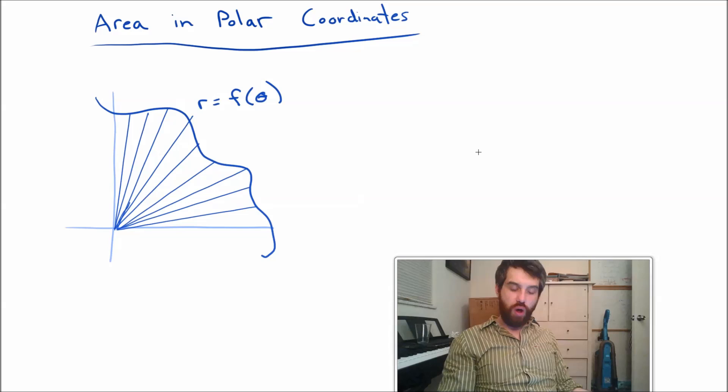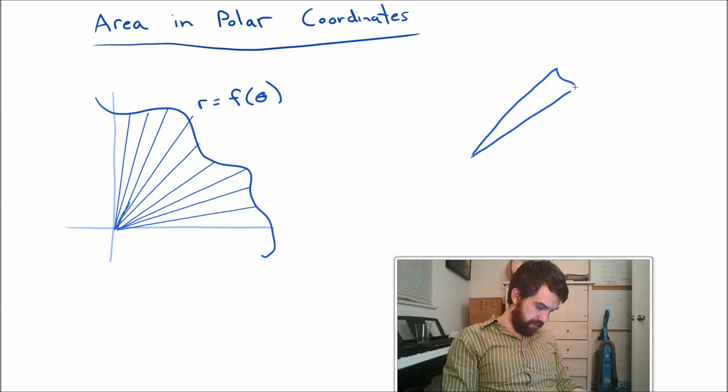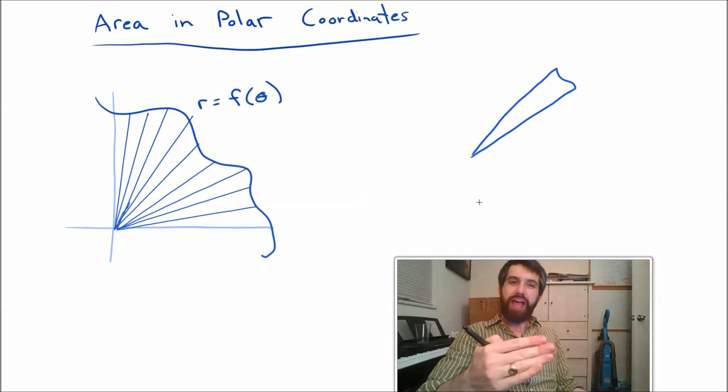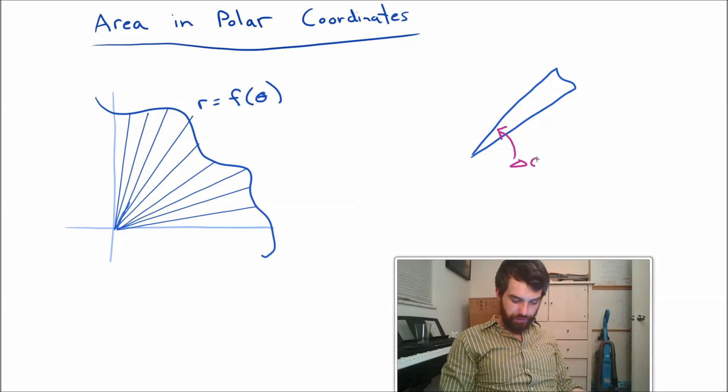Let me zoom in on one of these particular triangles. So it's going to look something like this. I've got a triangle, and it's not truly a triangle because the far edge of it is actually just this curve, so it's not necessarily exactly flat.